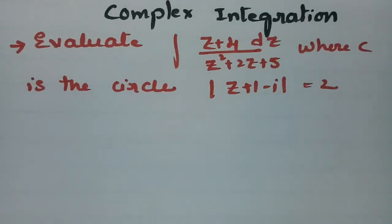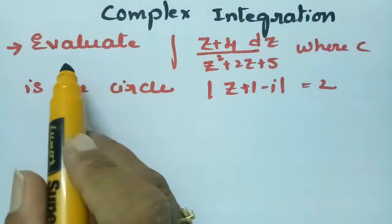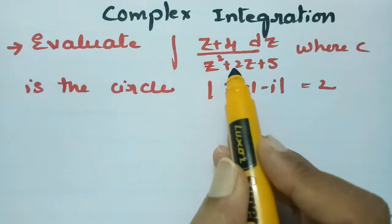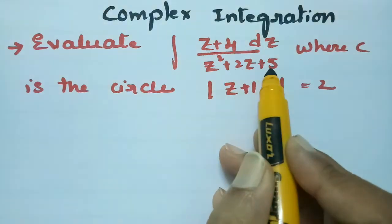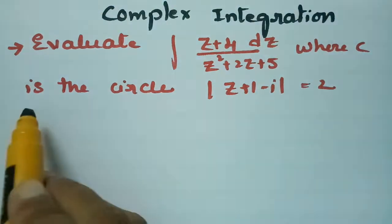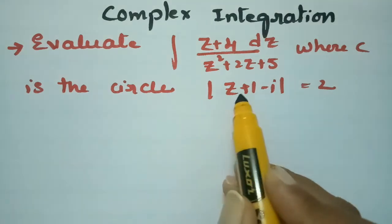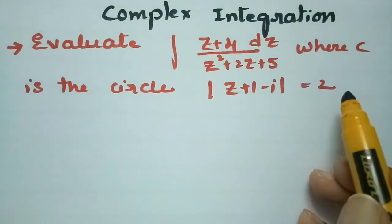In today's video, I am going to solve the most important problem from complex integration. Using Cauchy's integral formula, I'll evaluate the integral of (z+4) / (z²+2z+5) dz, where C is a circle defined by |z+1−i| = 2.